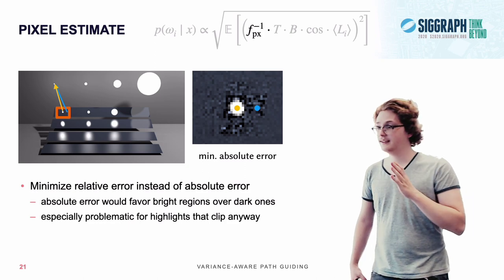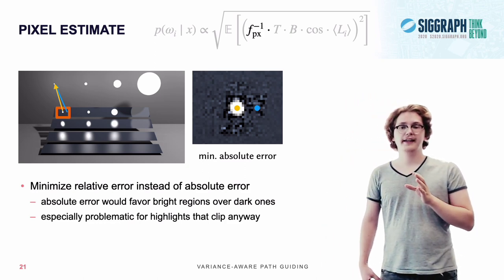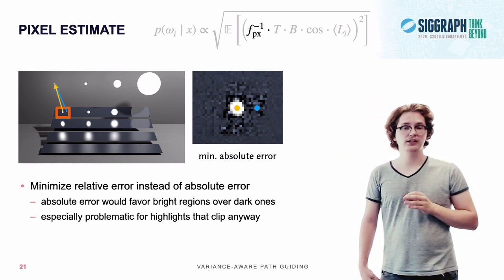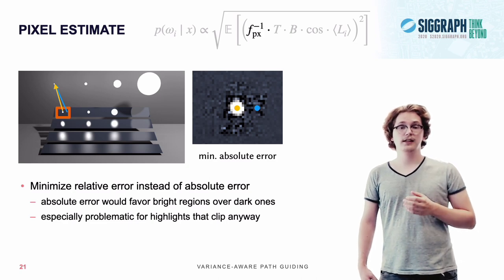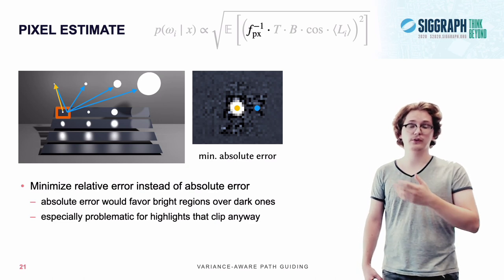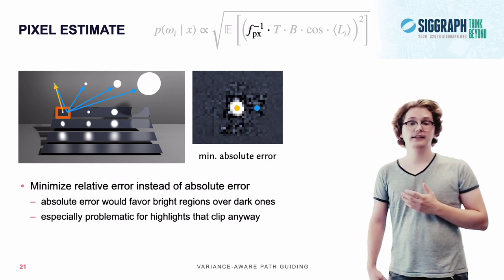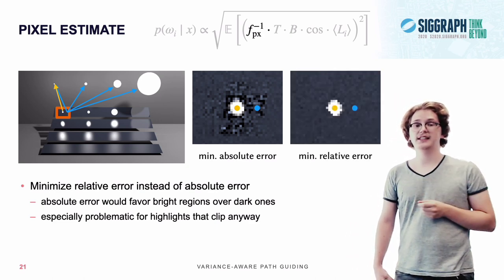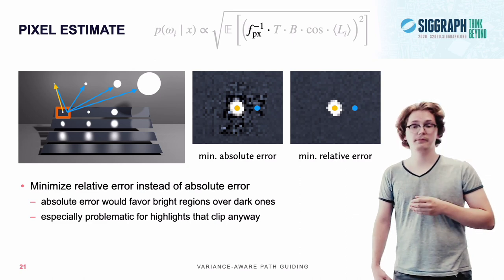Which means, we are instructing it to pay just as much attention to darker areas as to brighter ones. Which helps us also sample these other light sources, which are more important for the darker regions, and leaves us with an image that's free of this artifact, and visually more appealing.